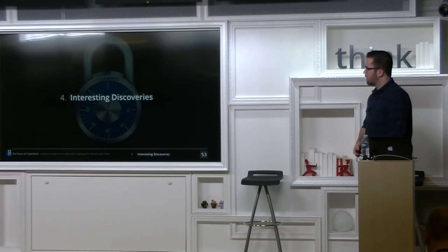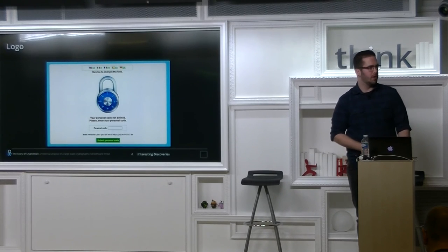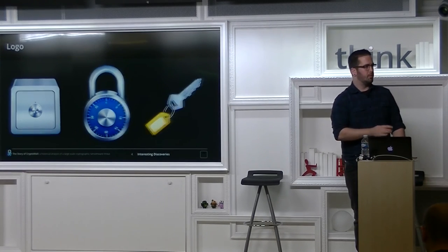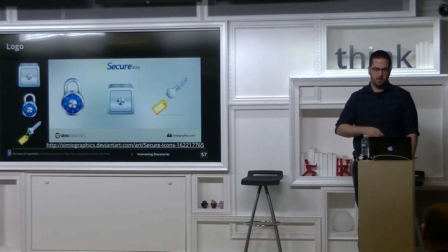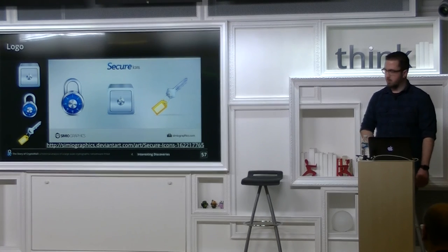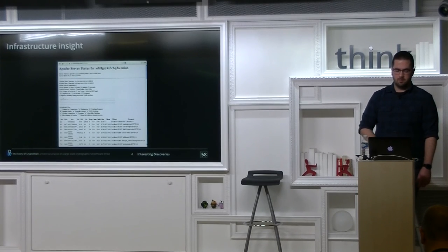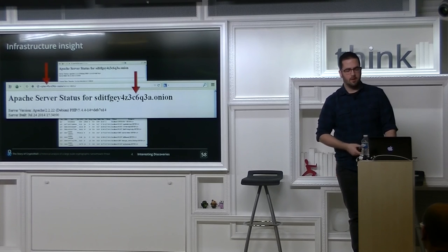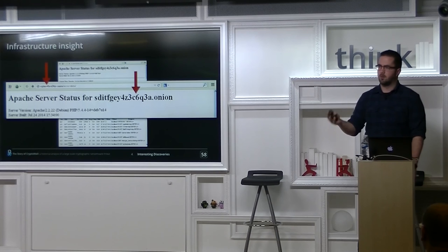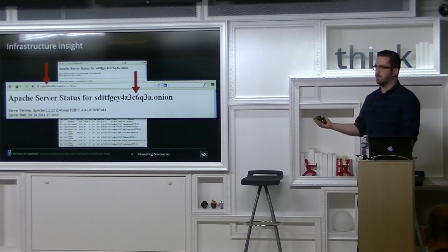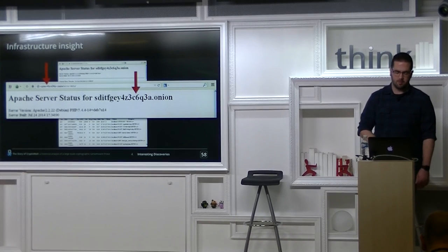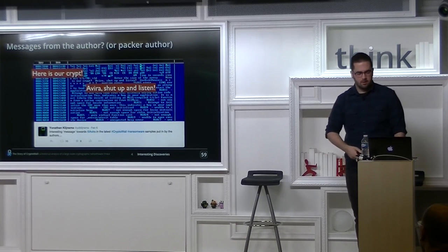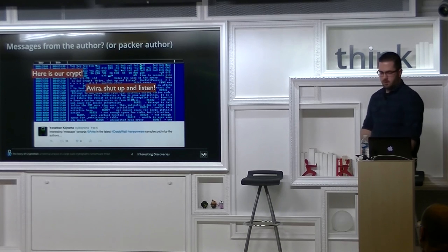Some interesting discoveries: they have a unique lock logo used on the first version and on every payment website — it's simply part of an icon pack stolen from a designer (Sumiographics). They just took his work and put it on their ransomware. About a year ago they were screwing up some internal systems — if you did a server-side request you'd see normal server error pages, but looking carefully you could see it was actually upstreaming, getting server error pages from different backends depending on which proxy you asked. They could be fingerprinted this way. At some point they also put messages in their initial packer — 'here's our crypt, shut up and listen.'